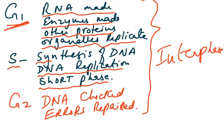In S phase of interphase, S stands for synthesis — DNA replication takes place. This is a relatively short phase. In the final phase, G2, DNA is checked and errors are repaired before the nucleus and then the cell divide.